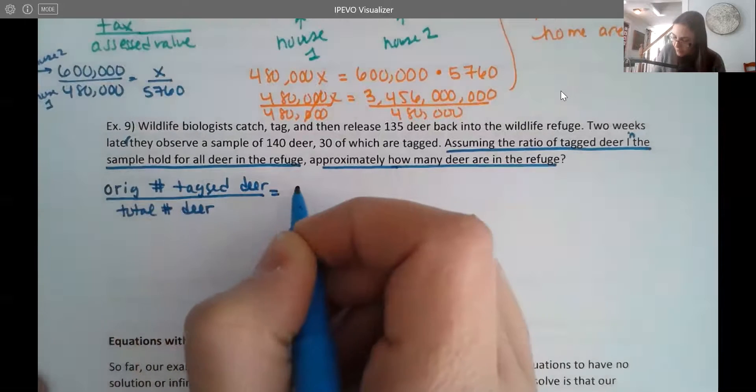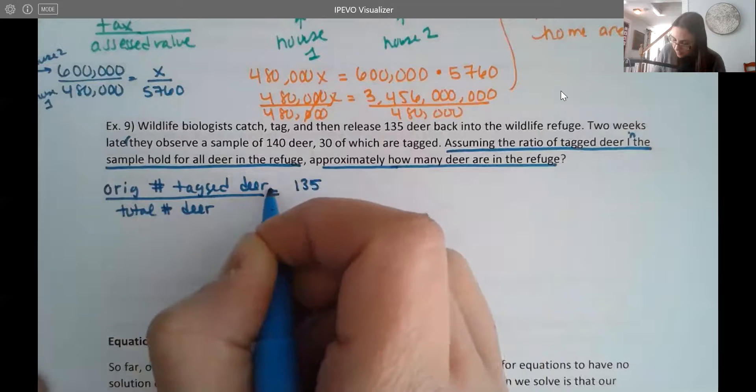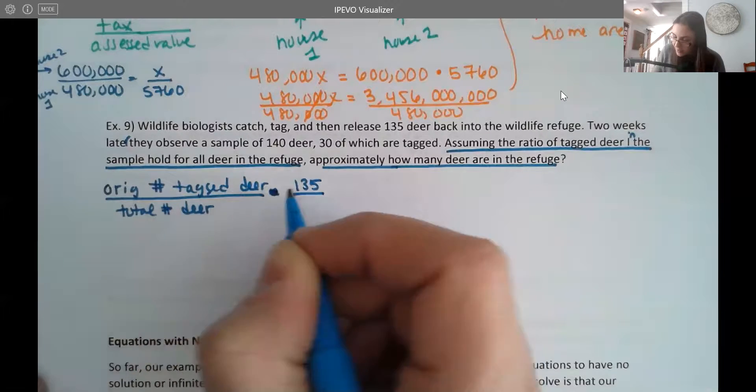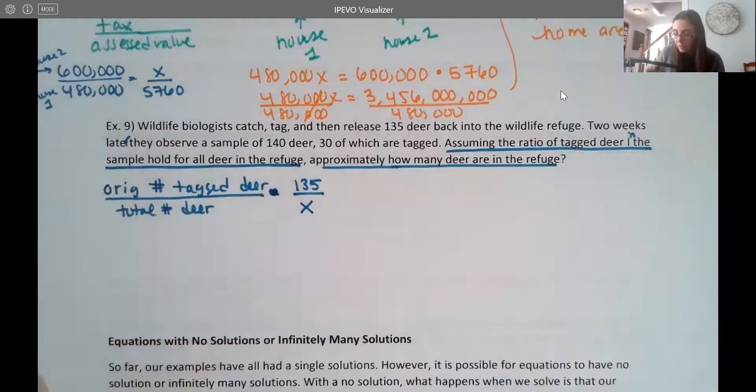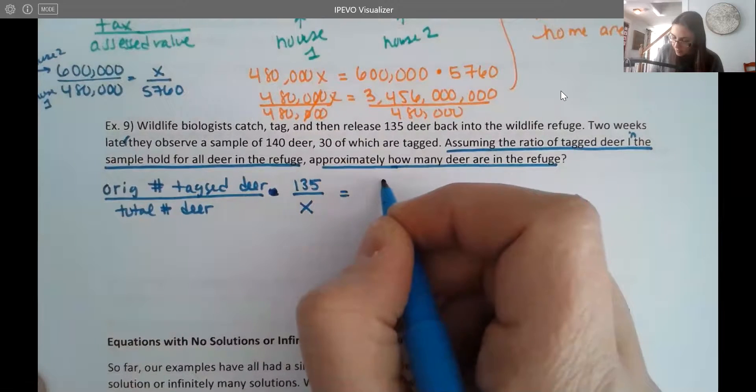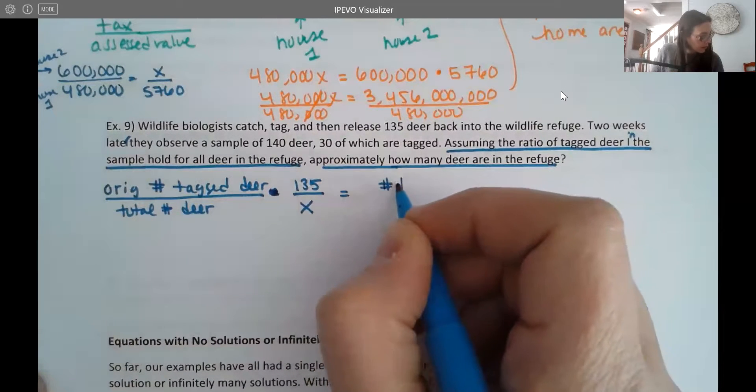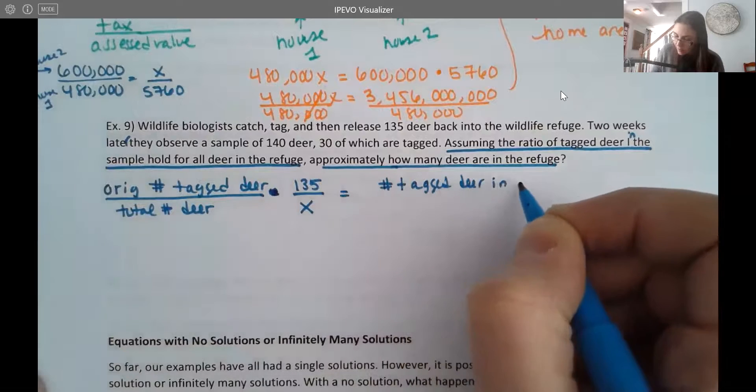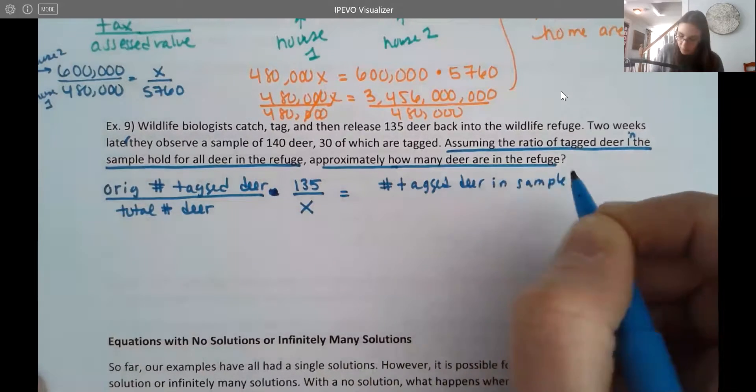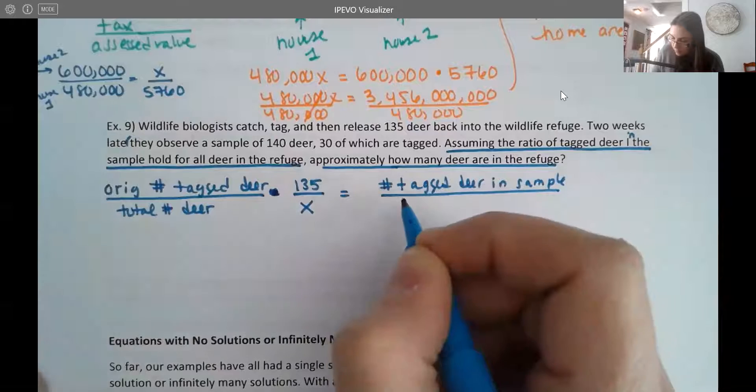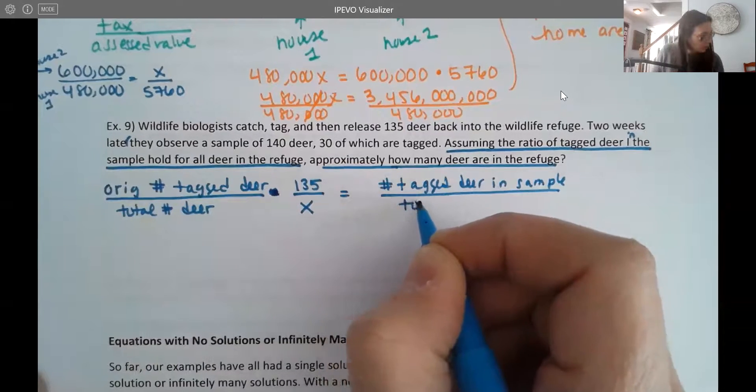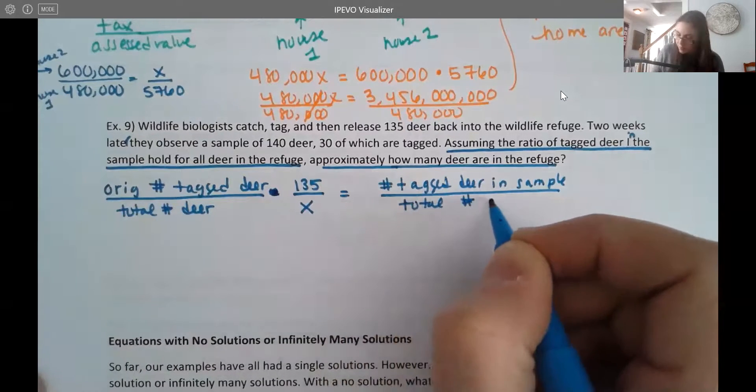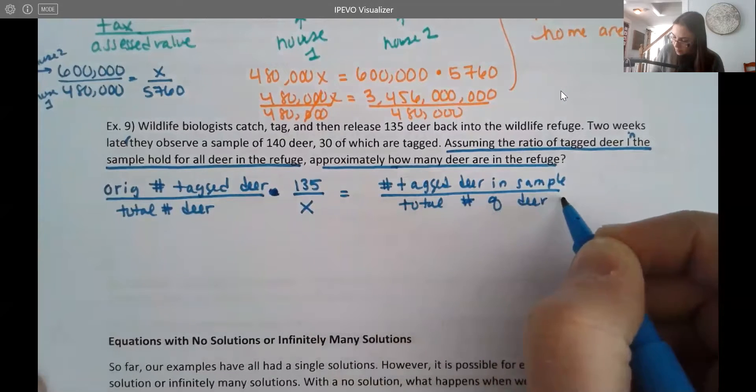So the original number of tagged deer was 135. And the total number of deer, we don't know. And then we're comparing that to the number of tagged deer in the sample to the total number of deer observed.